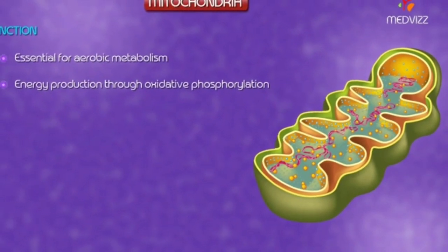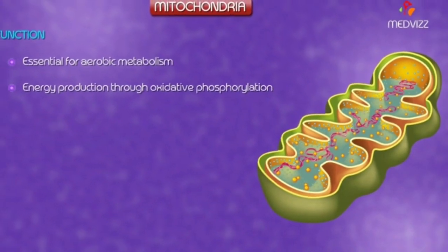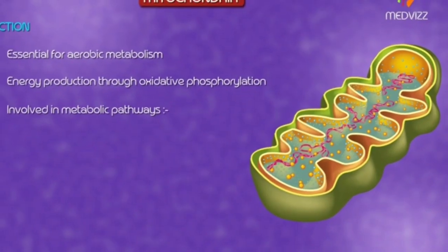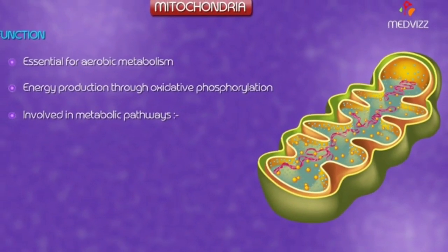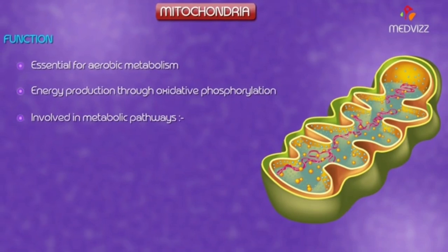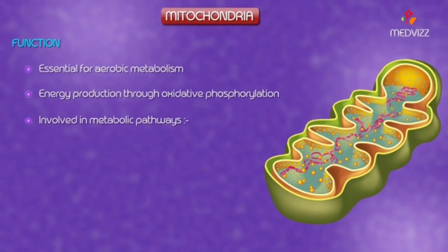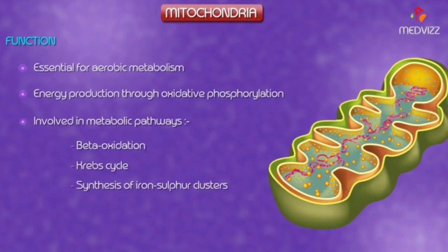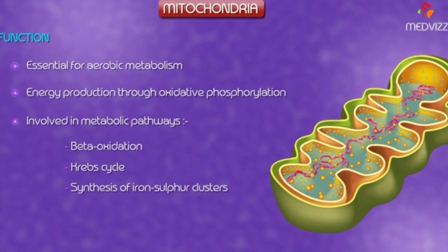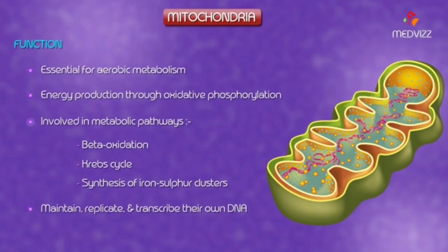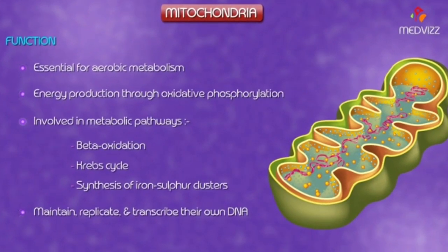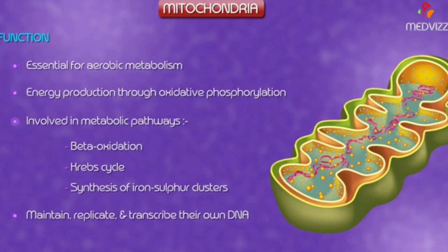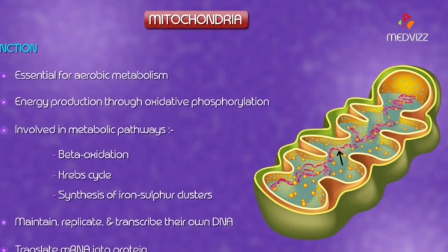Mitochondria are involved in several metabolic pathways including beta-oxidation, the Krebs cycle, and synthesis of iron-sulfur clusters. In addition, mitochondria maintain, replicate, and transcribe their own DNA and translate mRNA into protein.